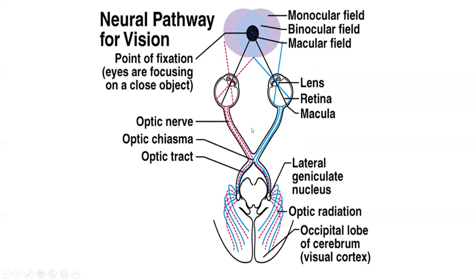From the retina all the way through the pathway back to the occipital, we call them different names so we can talk about them in different ways, but it's all the retinal ganglion cells — specifically the axons of the retinal ganglion cells — that are projecting back into the primary visual cortex.